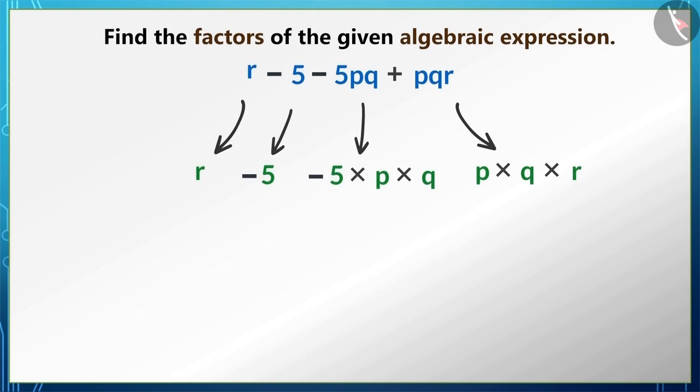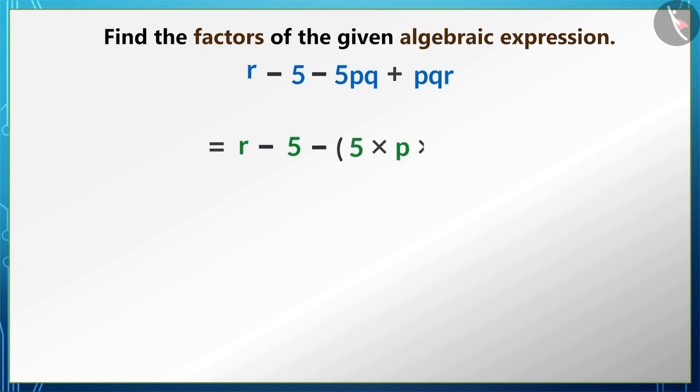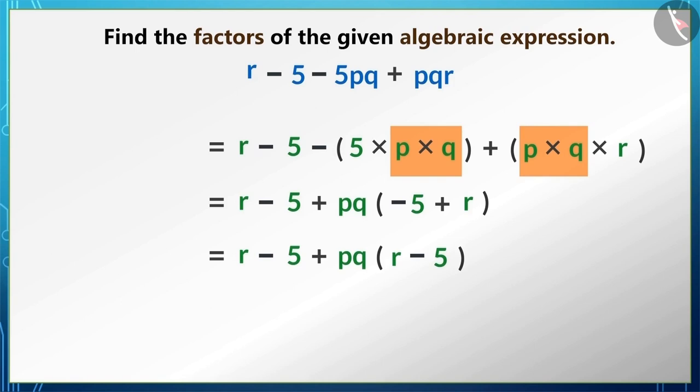All these terms do not have any common factors, but between the third term -5pq and the fourth term pqr, there is a common factor pq. So we can write the given algebraic expression as follows. Here pq is the common factor in the last two terms, so we can solve it further in this way.